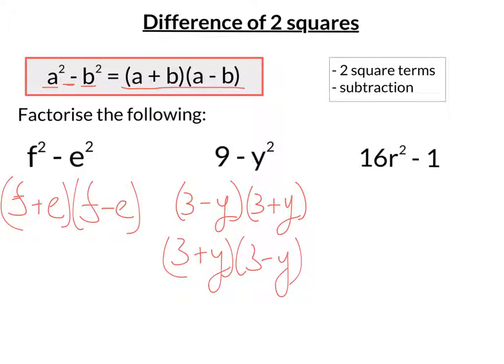Lastly, 16r squared minus 1. Well, 16r squared is a squared term, because if you square root it, you get 4r.